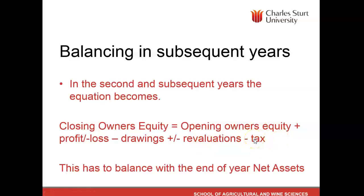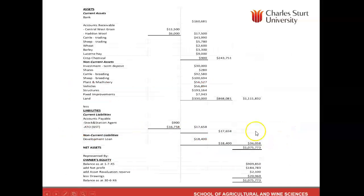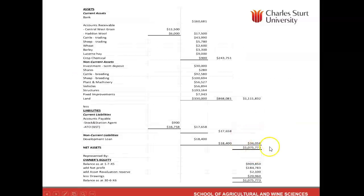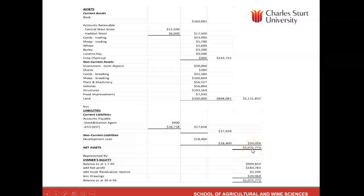So if we get it equal, we would balance at the end of the year asset figure. When we're looking at our balance sheet, we're looking at these two figures here — the net asset figure, which is total assets minus liabilities, this $1,075,000 figure here — and we need it to reconcile with the end of year owner's equity figure.